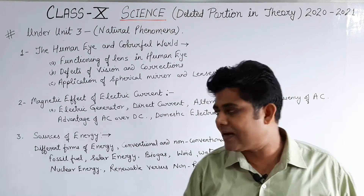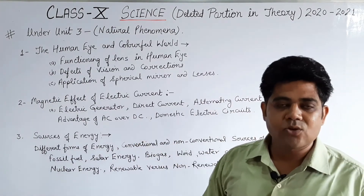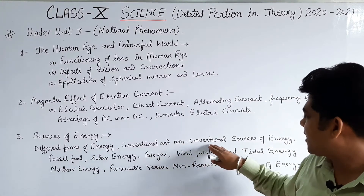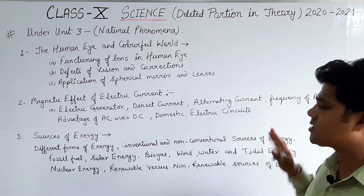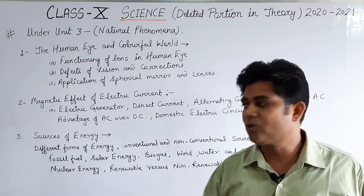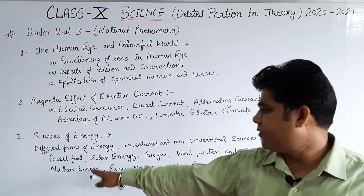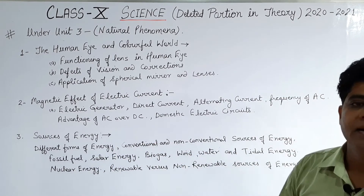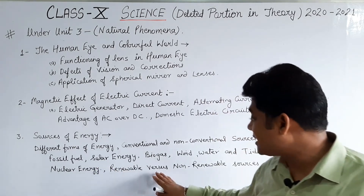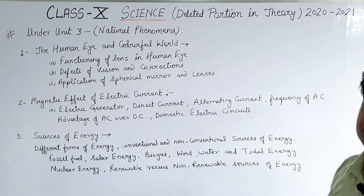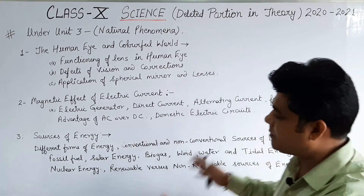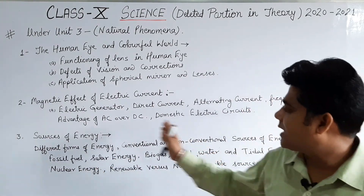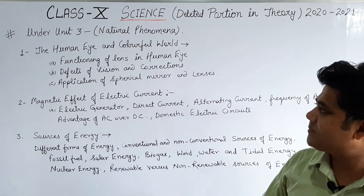The last physics chapter with deletions is Sources of Energy. From this chapter, different forms of energy, conventional and non-conventional sources of energy are removed — fossil fuels, solar energy, biogas, wind energy, water and tidal energy, nuclear energy, and renewable versus non-renewable sources of energy. Almost the entire chapter has been removed.